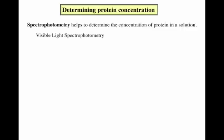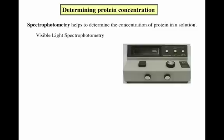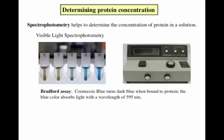Visible light spectrophotometry is the first kind we'll talk about. It is done using a spectrophotometer like the one pictured here. We use this type of spectrophotometry in microbiology when we analyze the effectiveness of different types of antibiotics on the growth of bacteria. The basic principle is that a solution with more protein will absorb more light than a solution with less protein. To quantify the amount of protein using this technique, we must first do a test known as the Bradford assay, which is one of many types of colorimetric assays in which the solution changes color based on the amount of protein it contains.